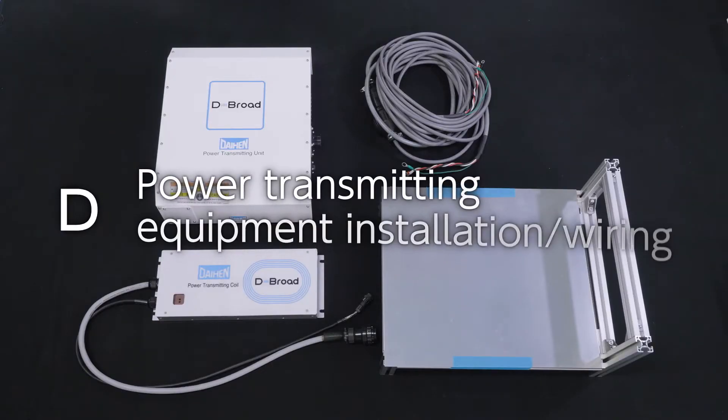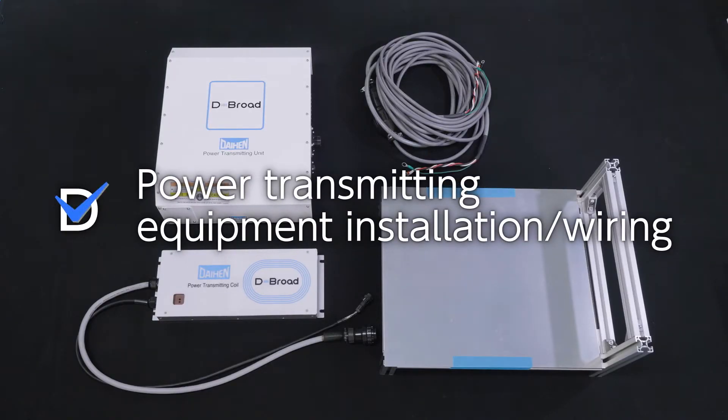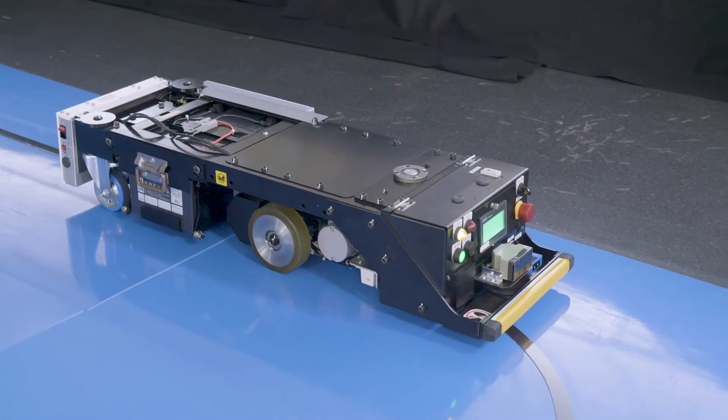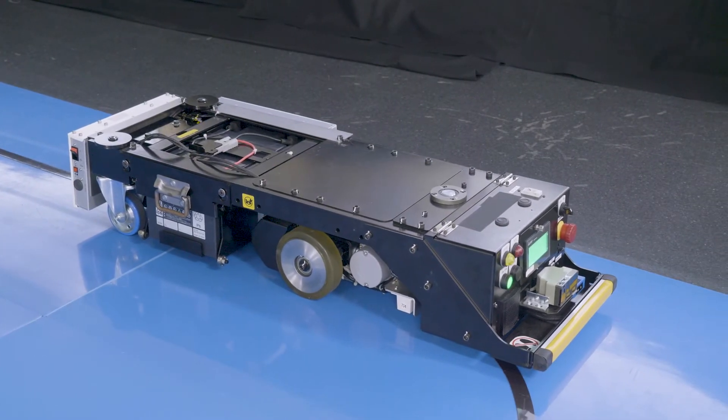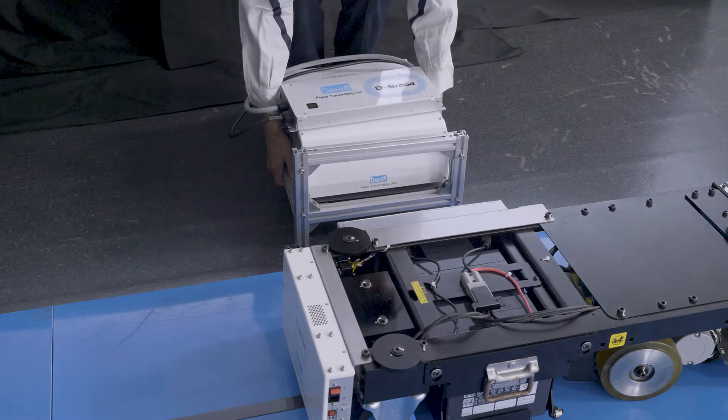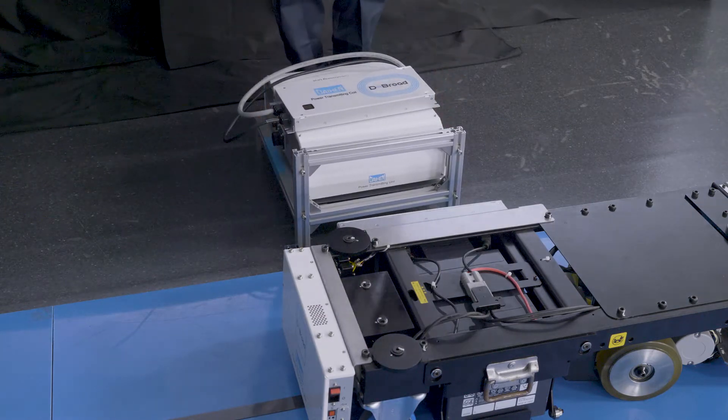Now you are ready for the second step. Let's install the power transmitting side. With the power receiving side on the AGV, move the AGV to the stop position. Install the power transmitting unit and the power transmitting coil unit at the AGV stop position.